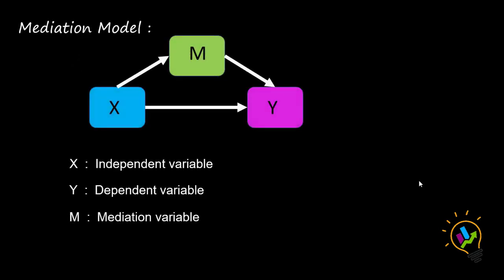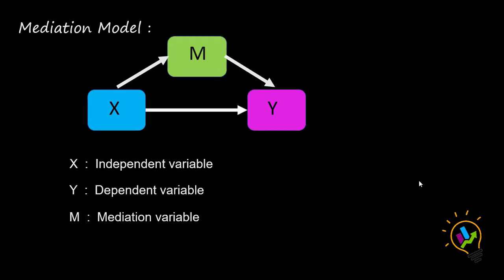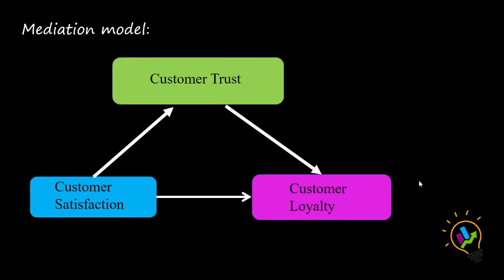In a structural equation model, when we draw a mediation we need three variables: independent variable, dependent variable, and mediation variable. Here X is the independent variable, Y is the dependent variable, and M is the mediation variable. For example, customer satisfaction impacting customer loyalty: customer satisfaction is the independent variable, customer loyalty is the dependent variable, and trust is the mediating variable.